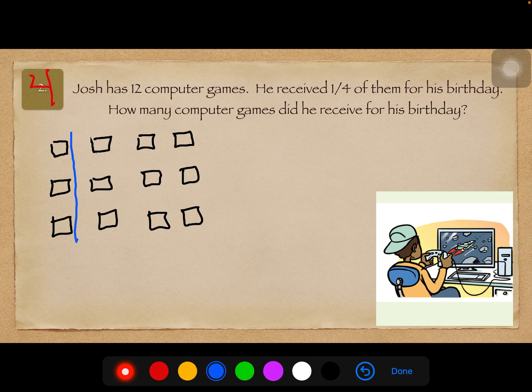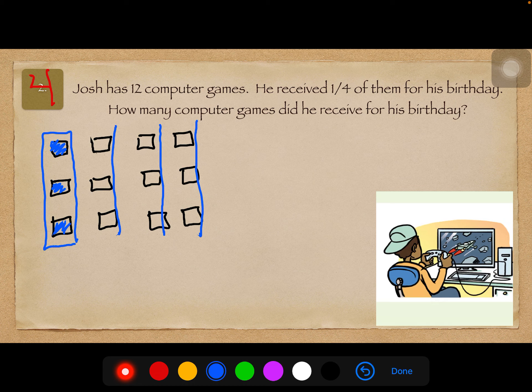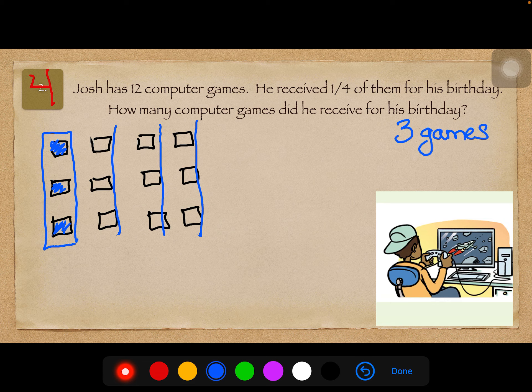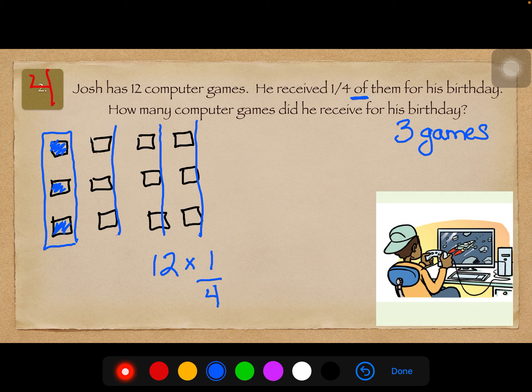Okay, so there's 12, he received 1 fourth of them. So, I'm going to break them into groups of 4. So here's 1 group, 1 fourth, 2 fourths, 3 fourths, 4 fourths. So, 1 fourth of them would be 3 games. So I'm going to write that down, and I'm going to double check something. I'm going to take that he has 12 games, 1 fourth of them, of in math means to multiply, and I'm going to multiply it by 1 fourth.